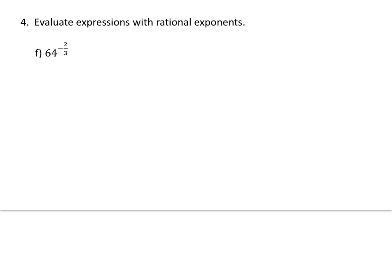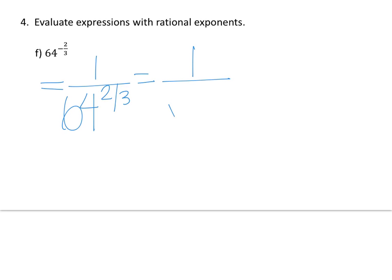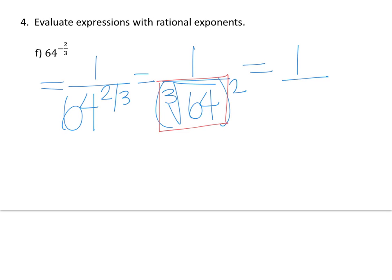Now we want to change this to a radical expression, but first notice that we have a negative exponent. We want to make that exponent positive before rewriting it. So that's going to be 1 over 64 to the positive 2 thirds. Now we can change that to a radical expression: 1 over the third root of 64 raised to the second power. The third root of 64 is 4, then 4 squared equals 16, so the answer is 1 over 16.